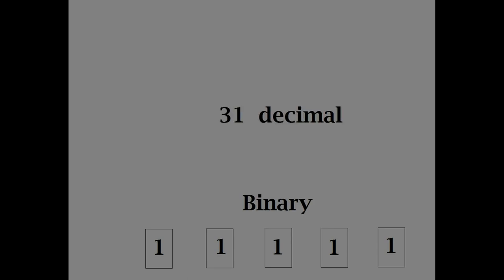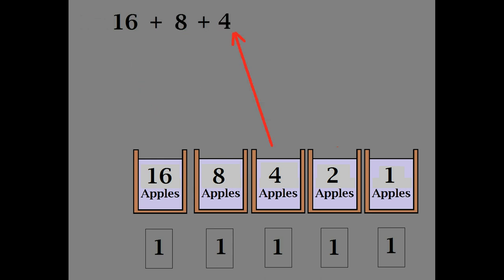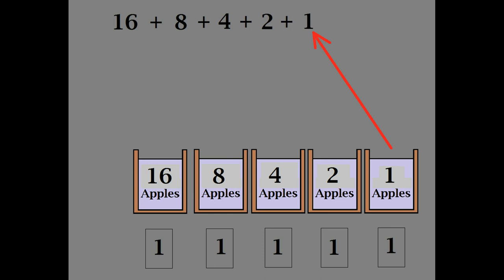Let's prove that. Just like we did before, we need to multiply it out. Since you can only fill each bucket once, one times any number is that number. So in reality, we don't need to do any multiplication, just addition. Add together all of the full buckets. Here's our proof.